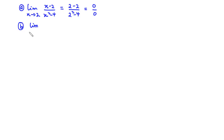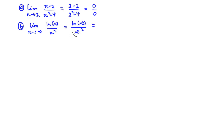Similarly, if we want to find the limit as x approaches infinity of ln x divided by x squared, that equals ln of infinity divided by infinity squared. Since ln of infinity is infinity and infinity squared is also infinity, we get infinity over infinity. So in both cases, direct substitution leads to either 0 over 0 or infinity over infinity.